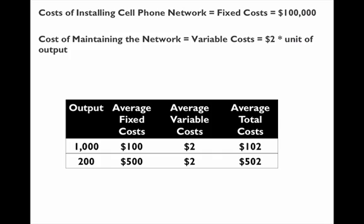That is why it's so difficult to break up a monopoly. If the government tries to break it up, the cost per unit increases for each company, and they'll have an incentive to merge again in order to reduce the cost of operation. This is why it's so difficult to break up a monopoly such as phone utilities or anything that has high fixed costs.